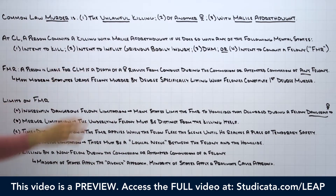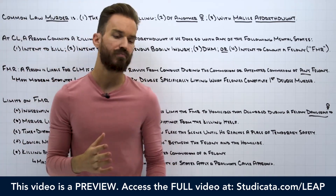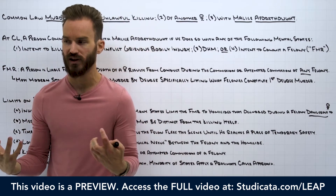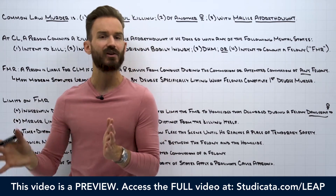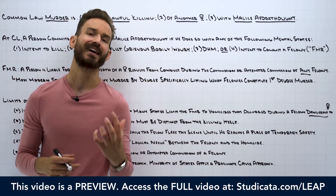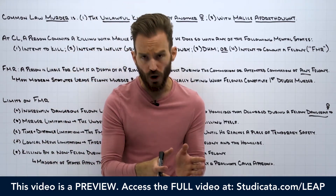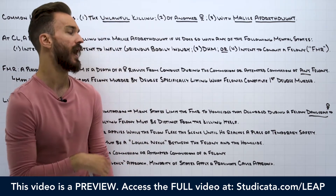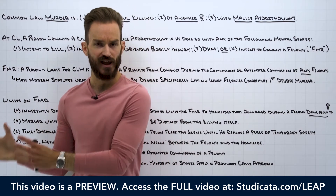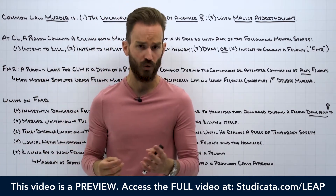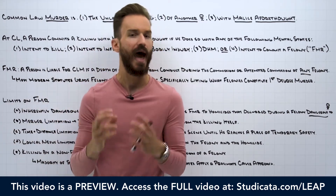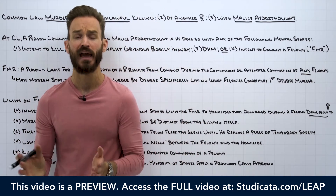For example, think about robbery. Robbery is pretty much in any state going to be considered an inherently dangerous crime, because if we look at the language of the statute, the common law definition of robbery has a requirement that the stealing actually occur by force or threat of force. It's virtually impossible to commit a robbery without putting human life in danger, because the definition says you have to use force or threat of force. Therefore, it's inherently dangerous — you can't safely commit a robbery. Just looking at the language of the statute, it's an inherently dangerous felony.